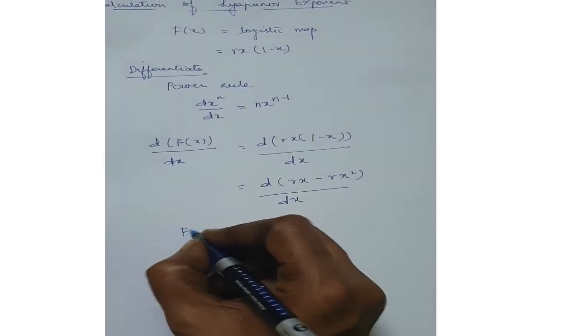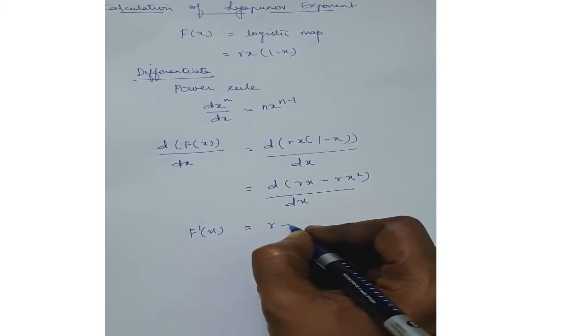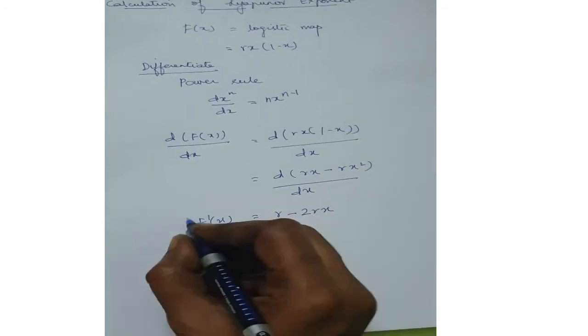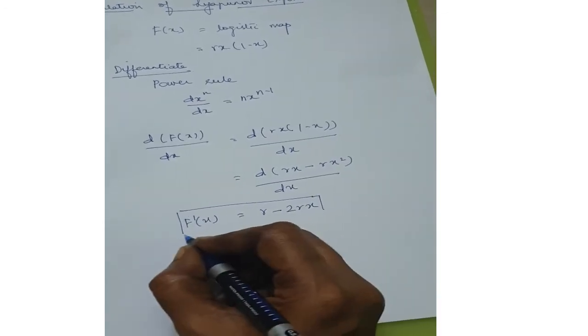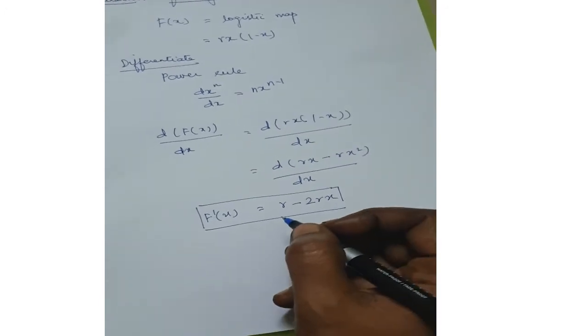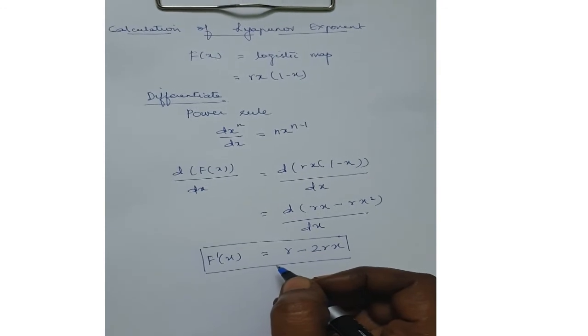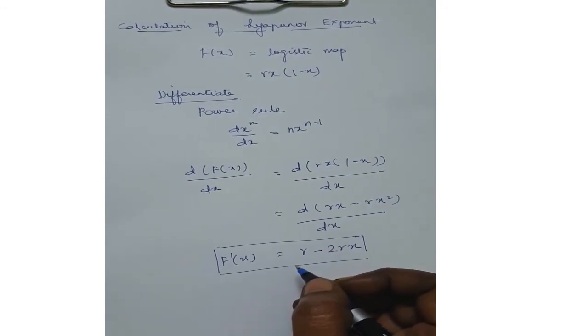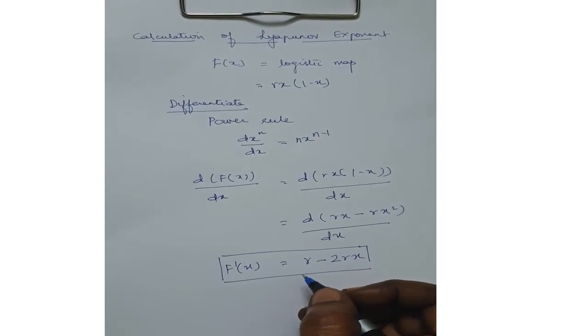We get f'(x) is equal to r minus 2rx. We apply this f'(x) for finding the Lyapunov exponent of the logistic map. Similarly, we can differentiate any 1D chaotic map using the differentiation rules provided that the map is differentiable.